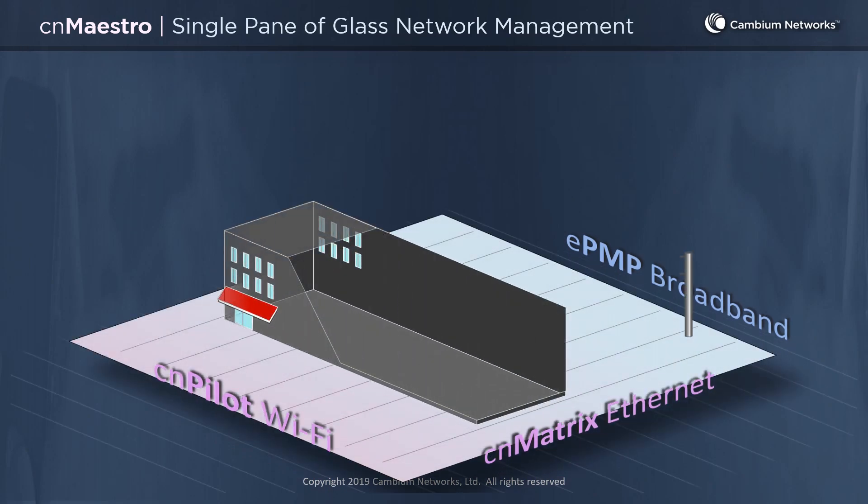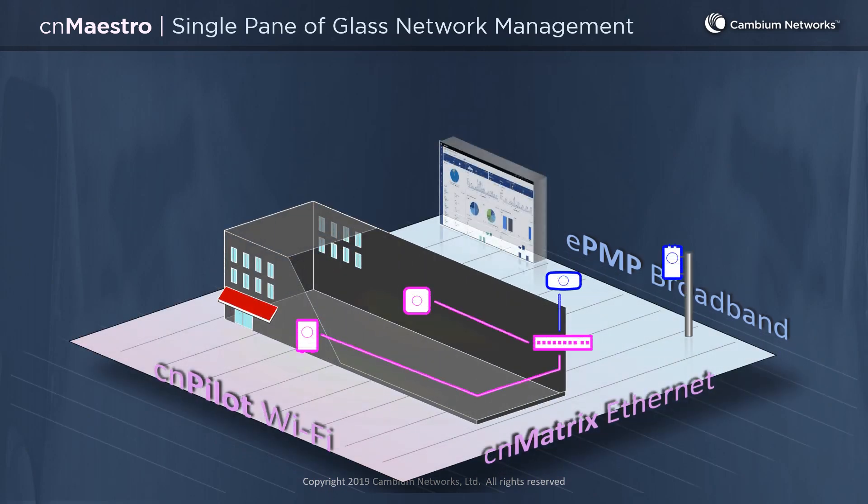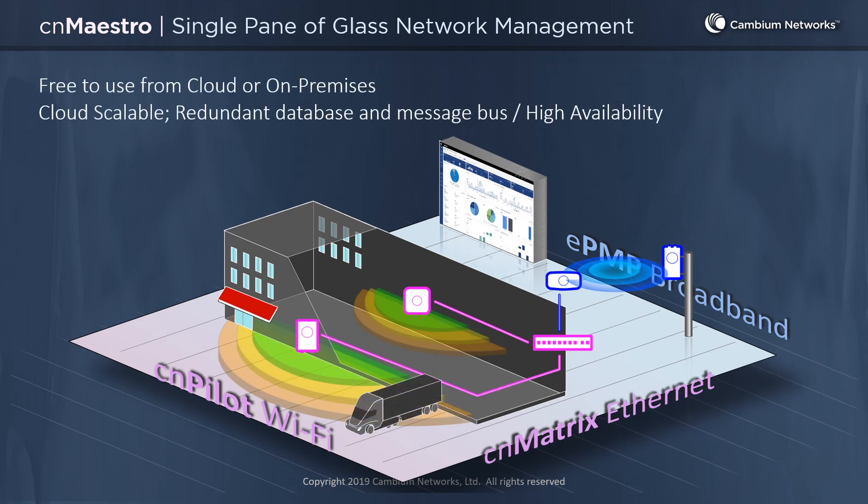CNMaestro is developed by Cambium Networks as a single pane of glass network management tool. It's designed to bring together the diverse components of the Cambium Networks wireless fabric. CNMaestro is free to use, from the cloud or on-premises or in your own private data center. It's built on cloud scalable technologies with a redundant database and a redundant message bus, and features high availability for 7x24 network management and network access.